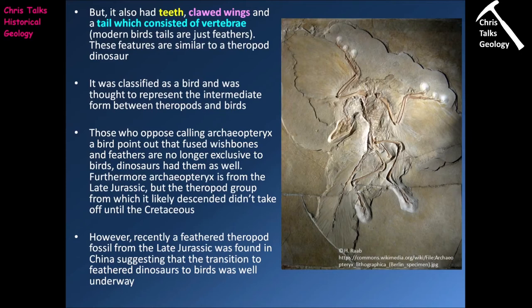If birds clearly evolved from theropods but theropods weren't around when these early bird-like dinosaurs were appearing, obviously we have a bit of a problem. However, we've managed to get around that issue. Recently, a feathered theropod dinosaur was found in late Jurassic rocks from China, suggesting that feathered theropod dinosaurs were present in the late Jurassic. So it's probable that one of those feathered theropod dinosaurs would eventually end up giving rise to the birds.